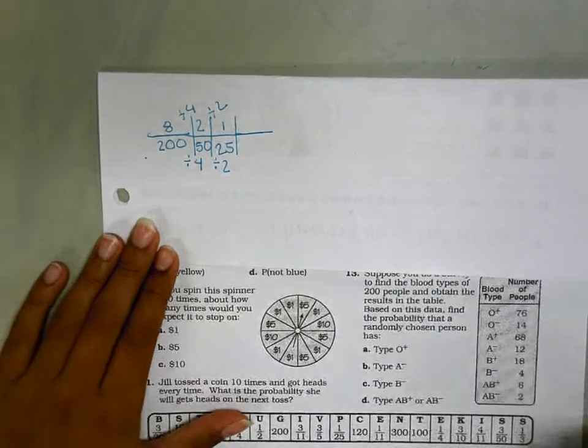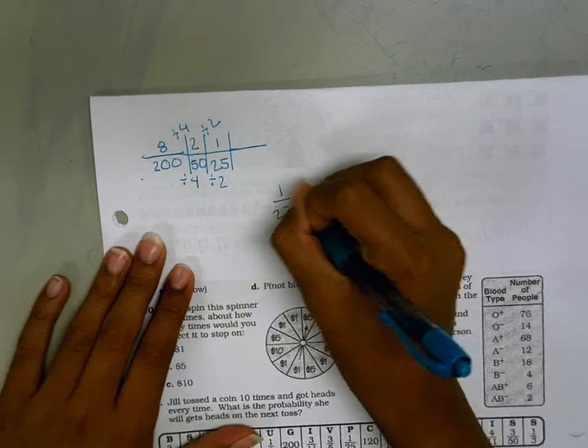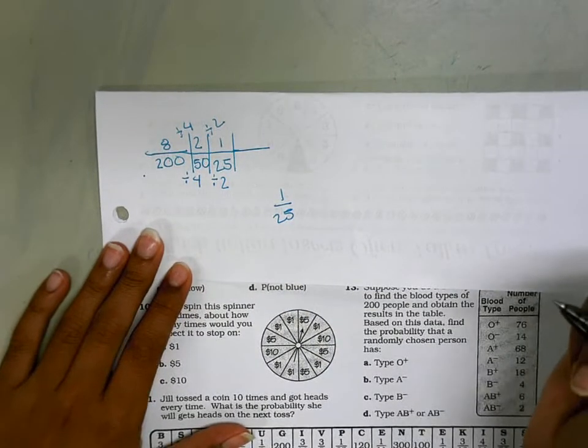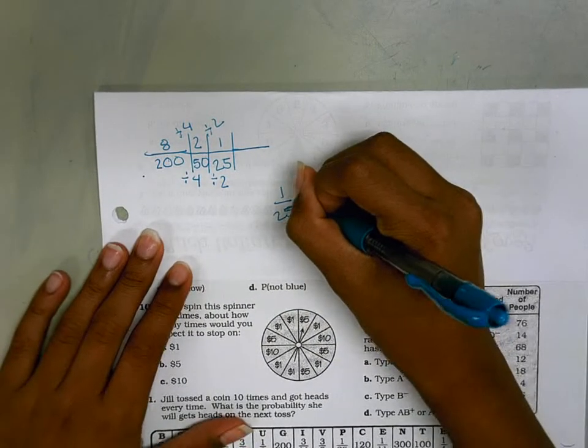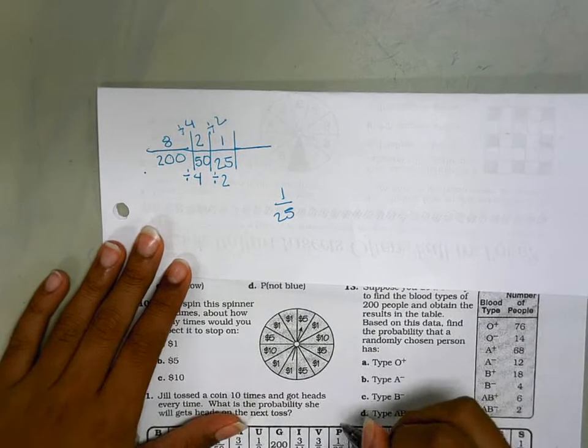And so we get 1 over 25 as the probability.